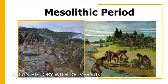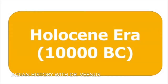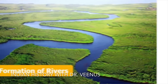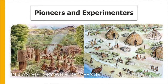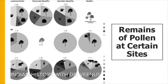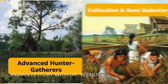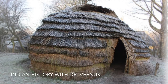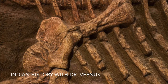The Mesolithic stage, also known as the Middle Stone Age, from 9000 to 4000 BC, coincides with the beginning of the Holocene era around 10,000 BC. It witnessed a change in climate from cold to warm and wet. Growth in the formation of rivers resulted in growth of forests and vegetation. The Mesolithic people were pioneers and experimenters who were preparing themselves to enter the cycle of food production. The remains of pollens at certain sites give us hints to a transition from advanced hunter-gatherers starting cultivation and leading a semi-sedentary lifestyle. People lived in huts with stone-paved floors, and evidence for subsistence patterns comes from animal bones found in large numbers.